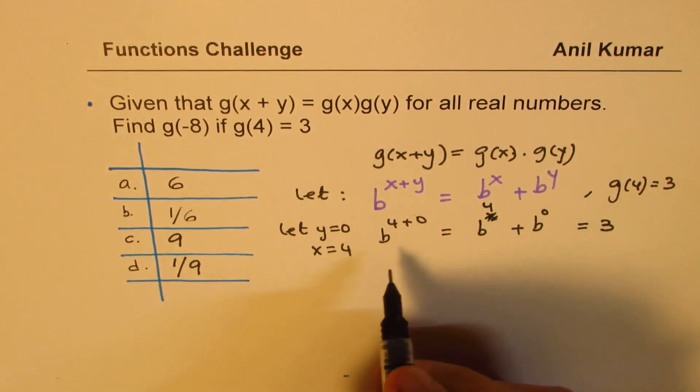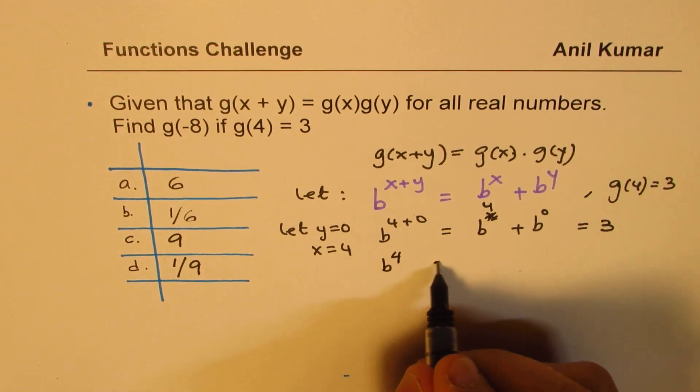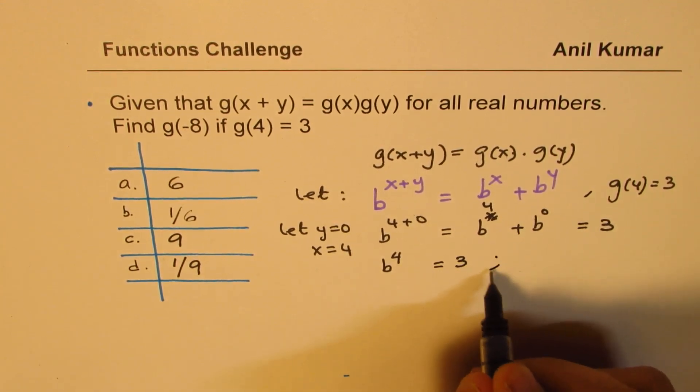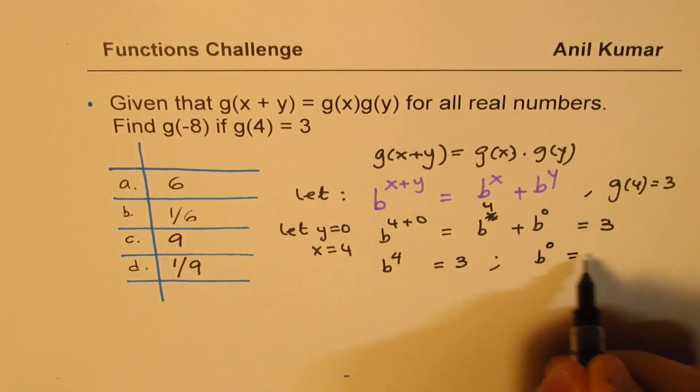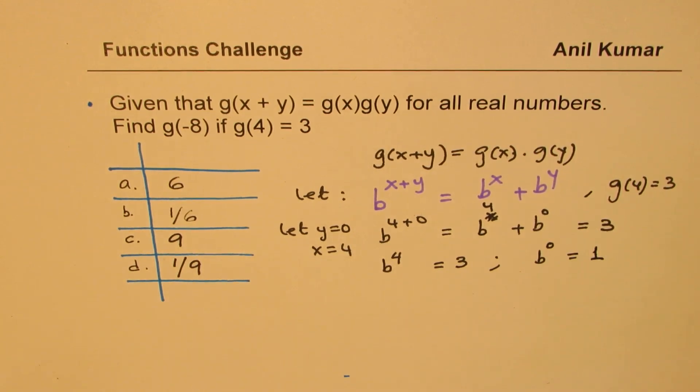So from here, we get b of 4, b to the power of 4 is basically equal to 3. And we also get anything to the power of 0 is always 1, right? What do we need to find? We need to find the value of minus 8.